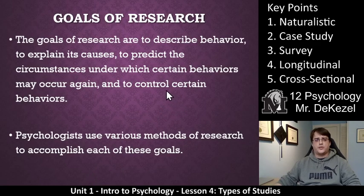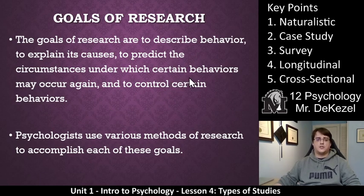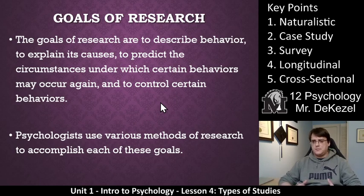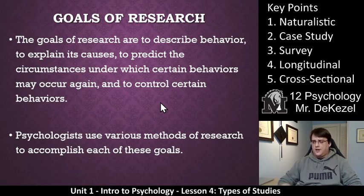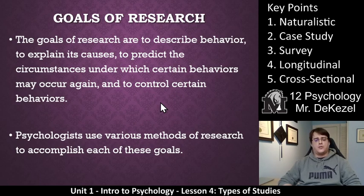We're going to talk about the goals of research first. The goals of research are to describe behavior, to explain its causes, to predict the circumstances under which certain behaviors may occur again, and in some circumstances to control it. We use these different methods to find out as much information as we can about a certain topic, behavior, or phenomenon to accomplish these goals. These goals depend on our philosophy of psychology, which we talked about in Lesson 2.